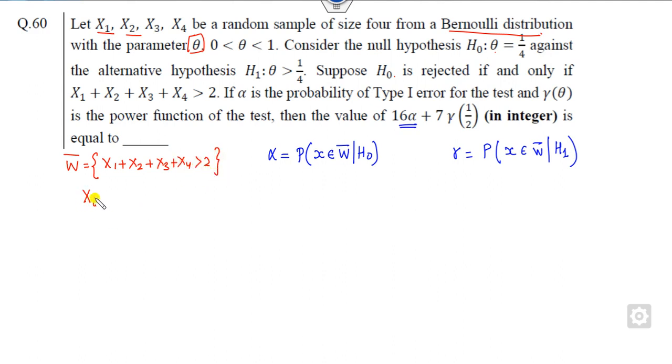What is given to you? xᵢs follow Bernoulli distribution with parameter θ. So it means sum of xᵢs will follow binomial distribution with parameters n=4 and θ. Therefore, if I consider this sum as y, it means your critical region w̄ is y > 2.